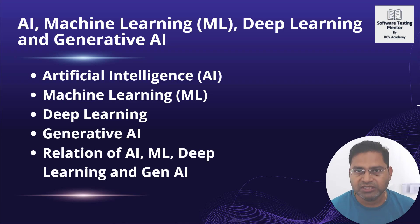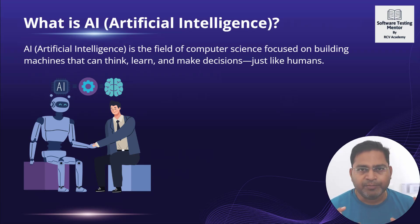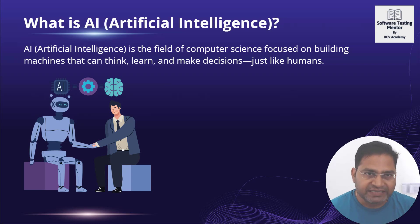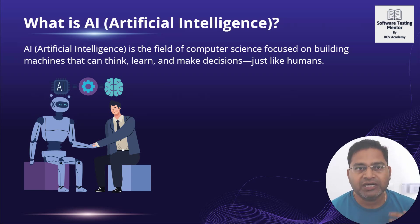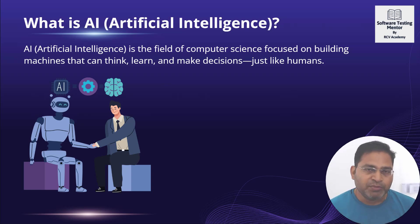The first thing is artificial intelligence — what exactly is AI? Artificial intelligence, as the name itself suggests, combines 'artificial' and 'intelligence' — making the machine intelligent artificially. As human beings, we have the natural ability to learn by seeing things around us, by analyzing, by our intuitions, and by listening to other people's thoughts and experiences.